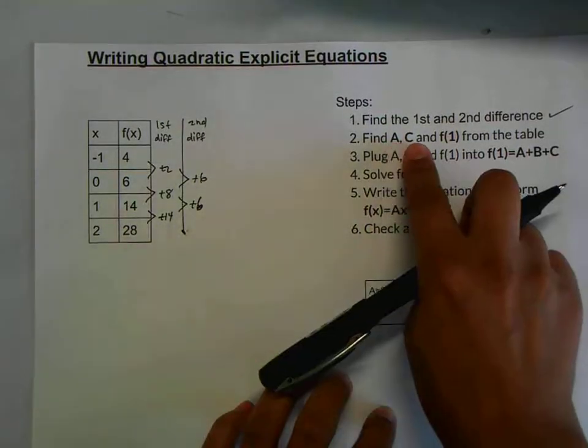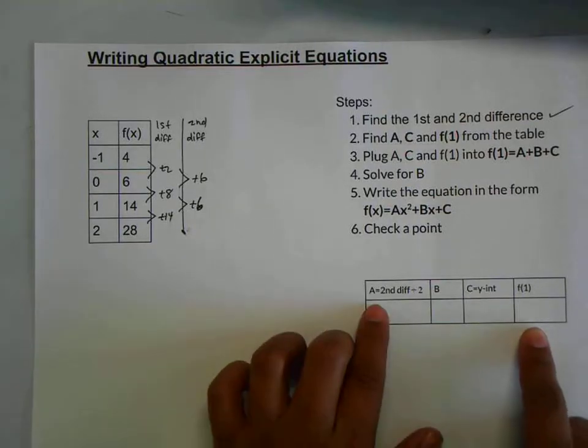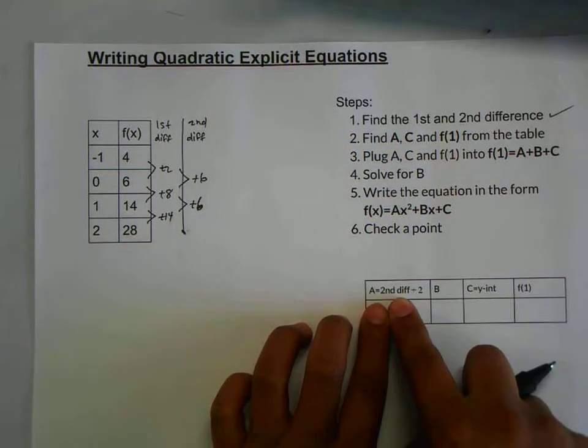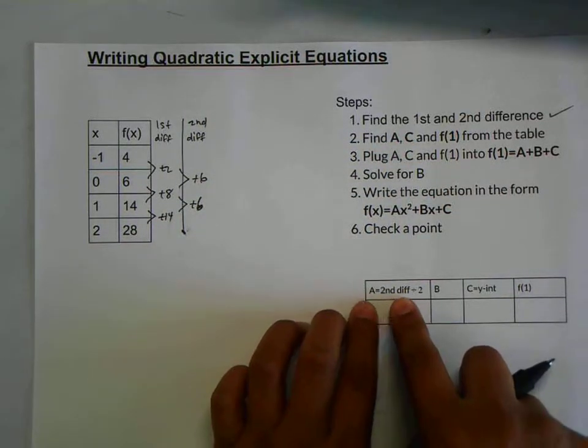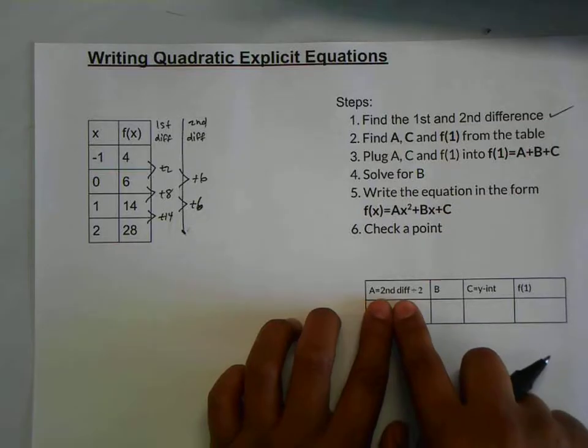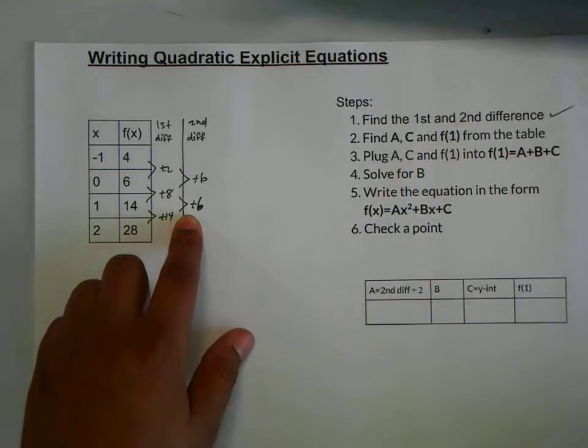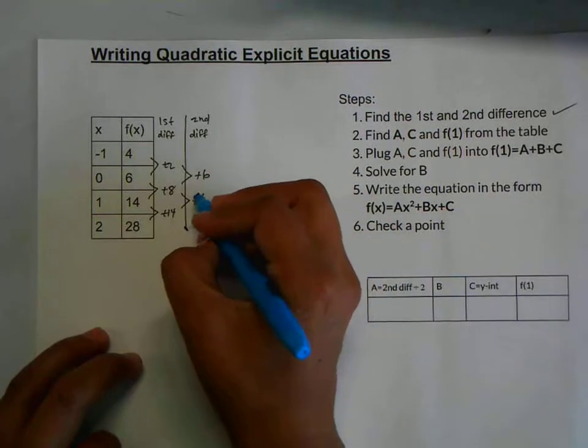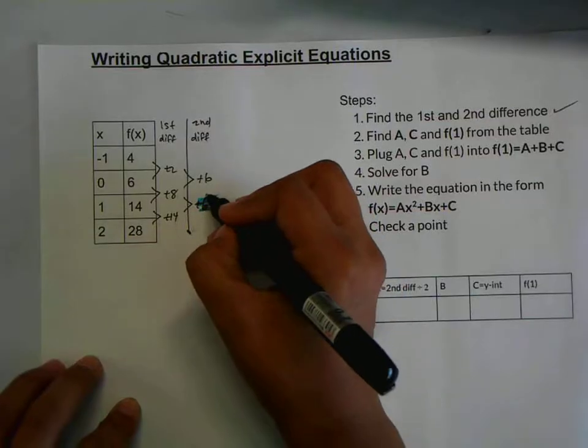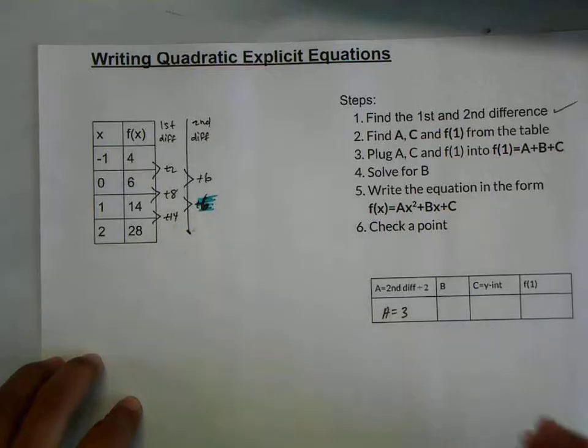Find a, c, and f(1). I made a little table down here so we can keep track of our a, b, c's, and f(1). The way you find a, which is the coefficient of x squared, is taking the second difference and dividing that by 2. As you can see, the second difference here is 6. Divide that by 2, giving us a is equal to 3.